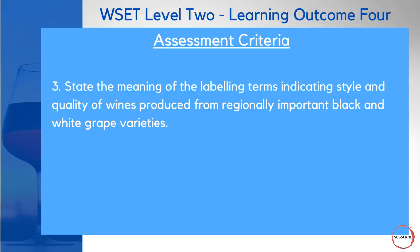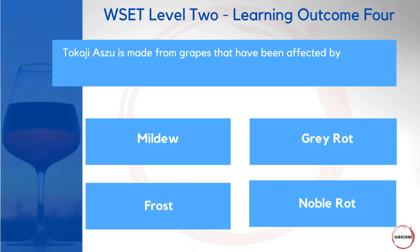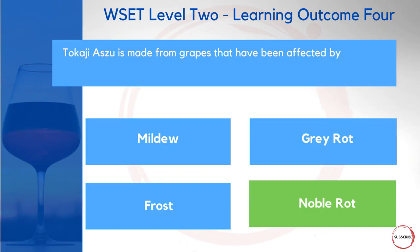Assessment criteria number 3 is about stating the meaning of labelling terms indicating style and quality — it's related to criteria 2 with some obvious crossovers. Tokaji Aszú is made from grapes that have been affected by what? Is it mildew, grey rot, frost, or noble rot? The more scientific name is Botrytis — it is deliberately encouraged in certain vineyards, adding certain qualities to the grapes. It's also known in the vineyards as noble rot, which is the correct answer.